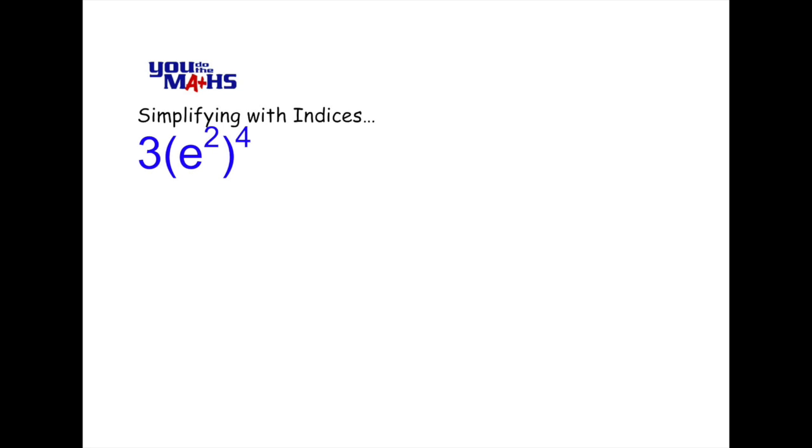Again you'll notice that the three is separate because that's not inside the bracket being raised to a power. Now if we use our rules about multiplying when there's a common base, we've got e squared multiplied out four times and that means we add the indices. 2 plus 2 plus 2 plus 2 is 8, so e is raised to the power 8.